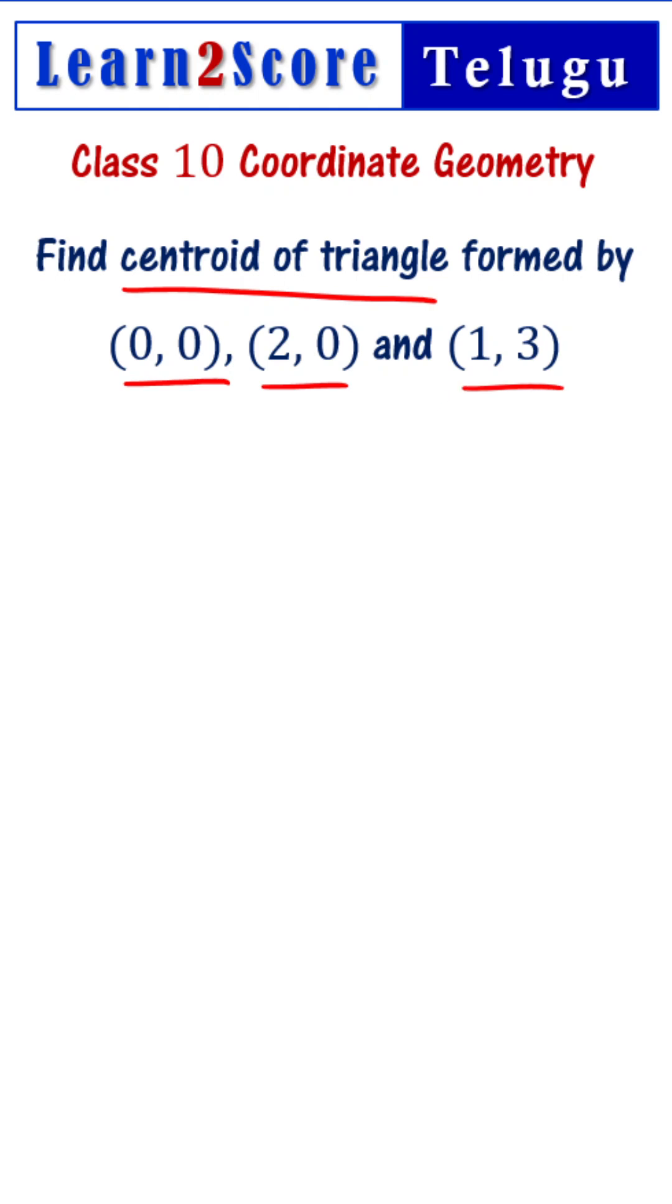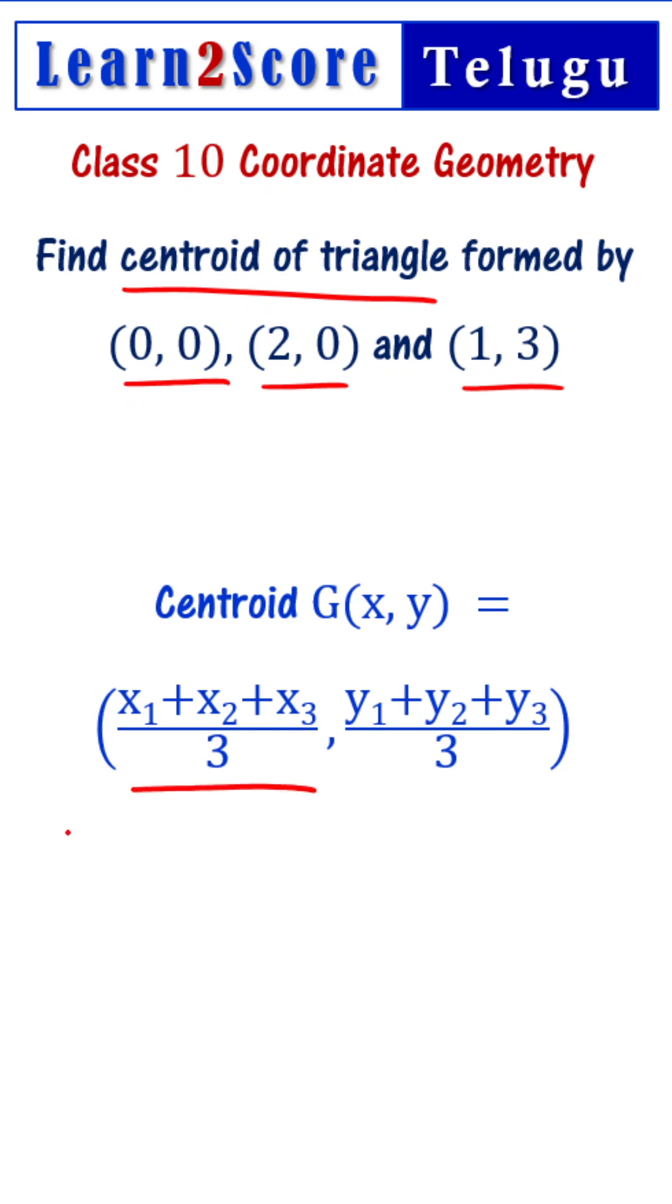The centroid of the triangle coordinate formula is x1 plus x2 plus x3 divided by 3, y1 plus y2 plus y3 divided by 3.